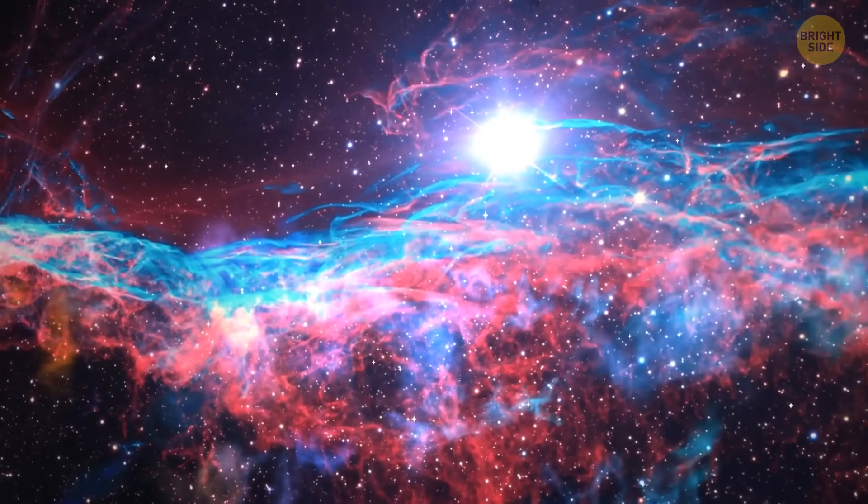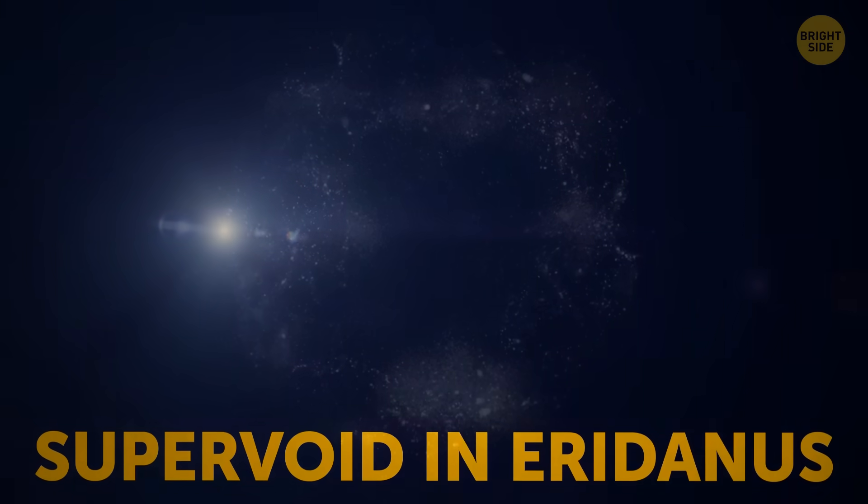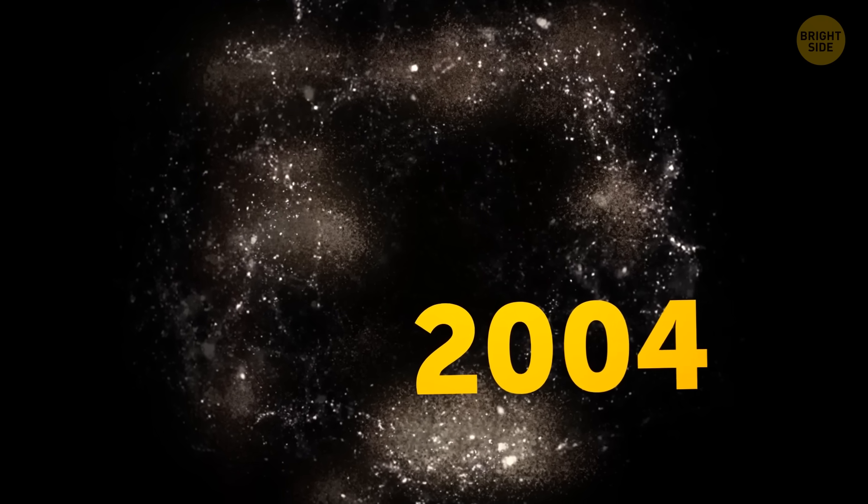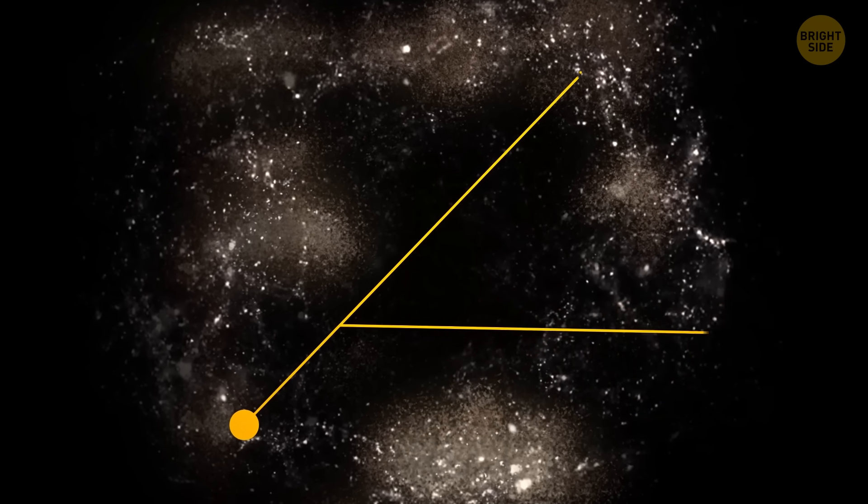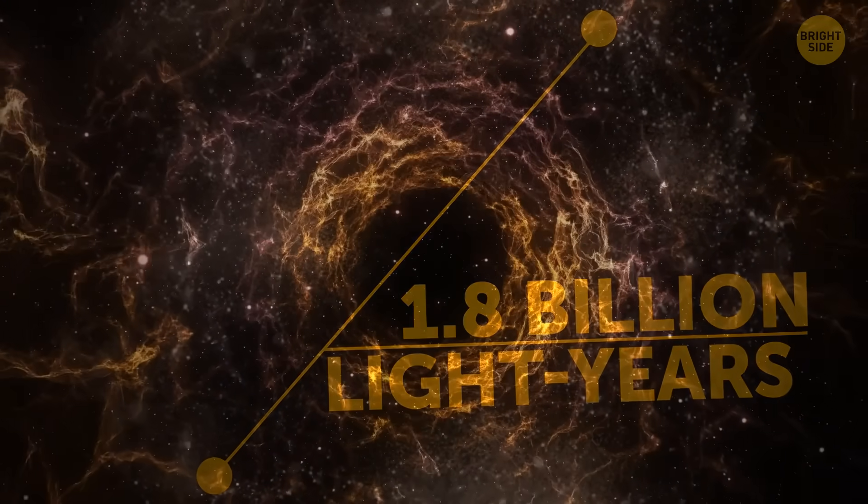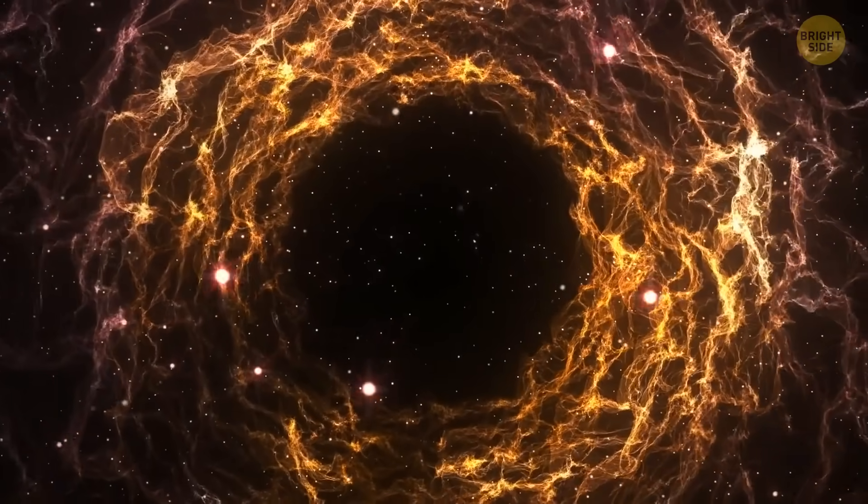Space seems to be extremely deserted, but some places are even emptier than the rest, like Supervoid in Eridanus. Astronomers noticed this huge region of empty space in 2004. The area stretches 1.8 billion light-years across. It's mysteriously devoid of gas, dust, stars, and even dark matter.